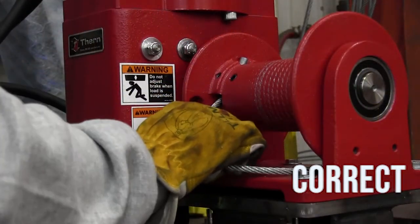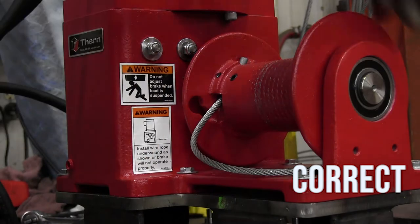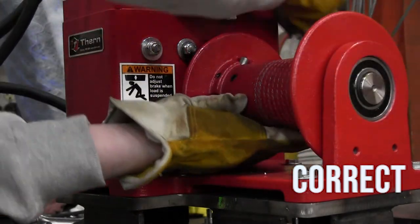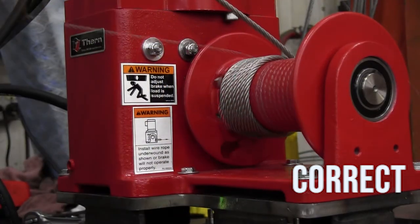Here we are demonstrating proper installation of the wire rope. Please note the warning label on the side of the reducer with instructions to install the wire rope in an underwound fashion.